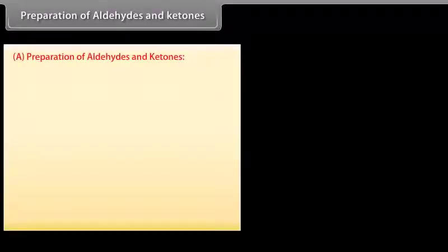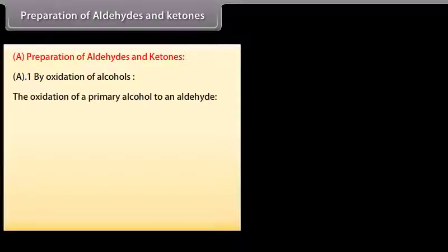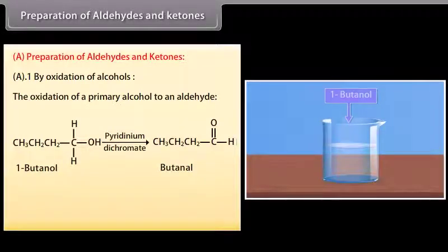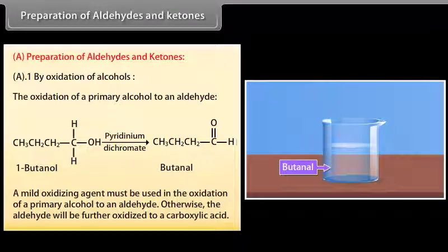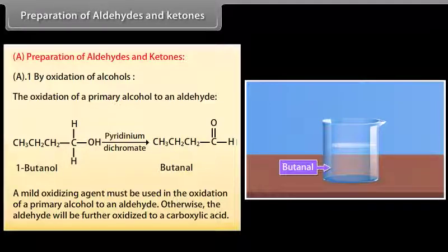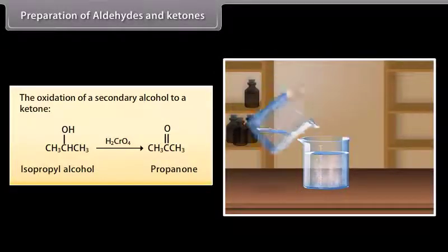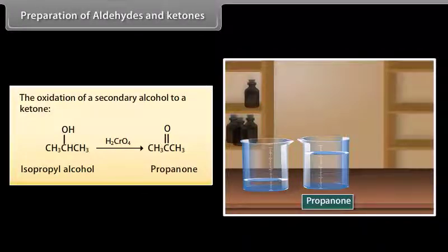Preparation of aldehydes and ketones: by oxidation of alcohols. The oxidation of a primary alcohol to an aldehyde — butanol is oxidized in the presence of pyridinium dichromate to form butanal. A mild oxidizing agent must be used; otherwise, the aldehyde will be further oxidized to a carboxylic acid. For oxidation of a secondary alcohol to a ketone: adding chromic acid to isopropyl alcohol forms propanone.